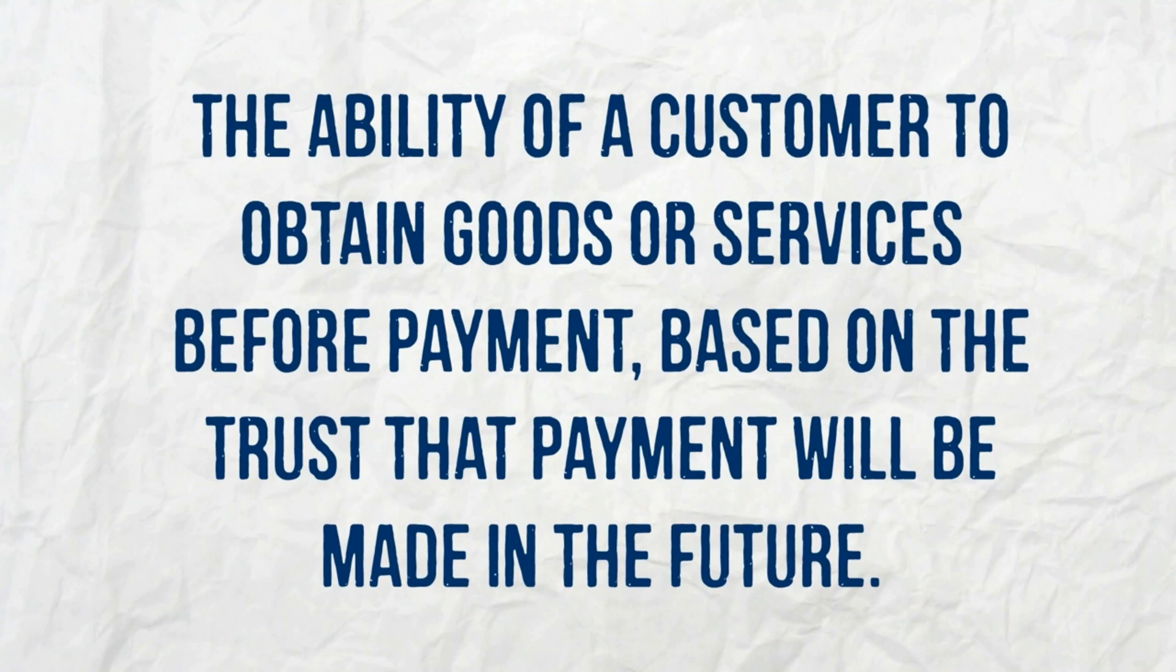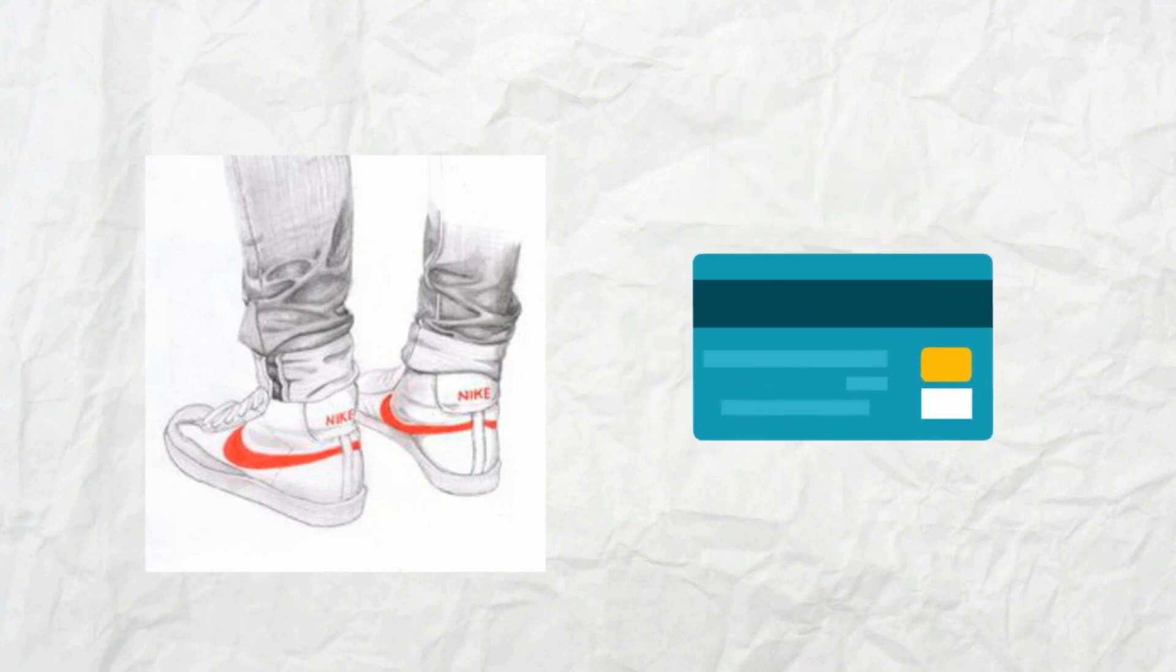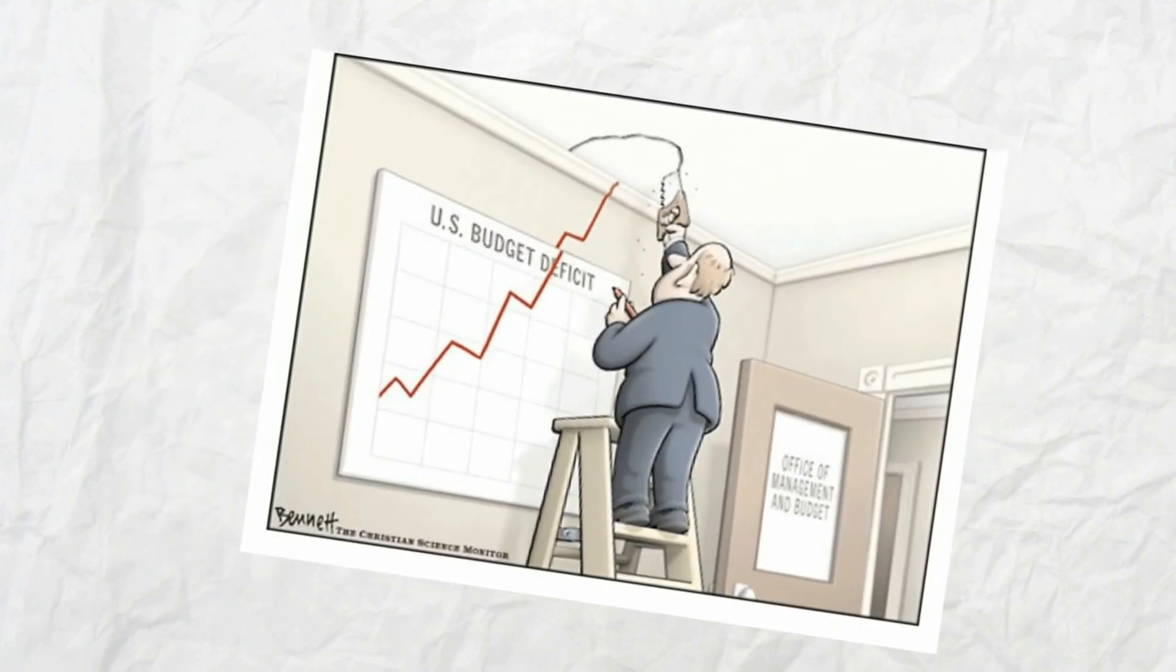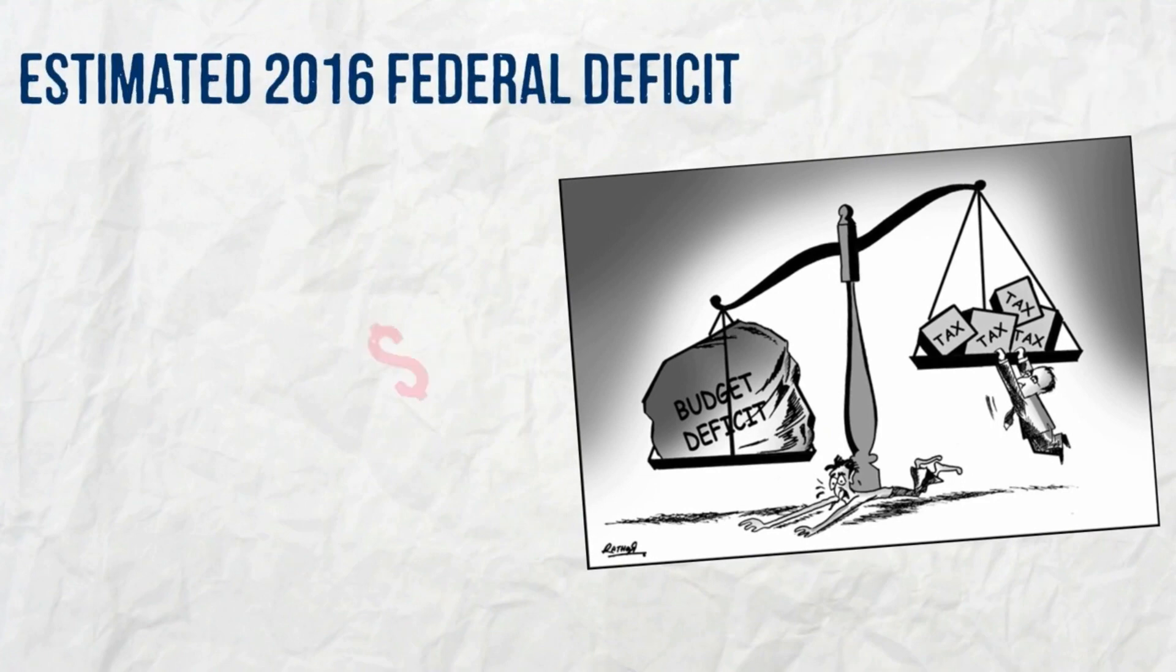Credit can be as simple as a person charging a new pair of shoes on a credit card or as complex as a government borrowing billions to fund a budget deficit. A budget deficit is a slick way of saying a government spends more money in a given year than it collects in taxes, which in the United States has happened in 45 of the last 50 years.